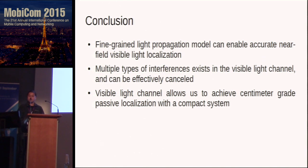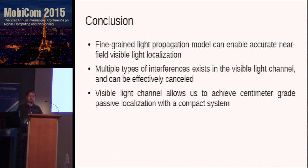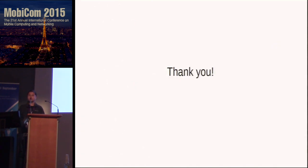As a conclusion, our fine-grained light propagation model can enable accurate passive visible light localization. We identified multiple types of interference in the visible light channel and showed that they can be effectively cancelled out for sensing applications. Also, through prototyping and evaluation, we show that the visible light channel allows us to achieve centimeter-grade passive localization within a compact system. That concludes my talk — thanks for listening, and I would be glad to answer your questions.